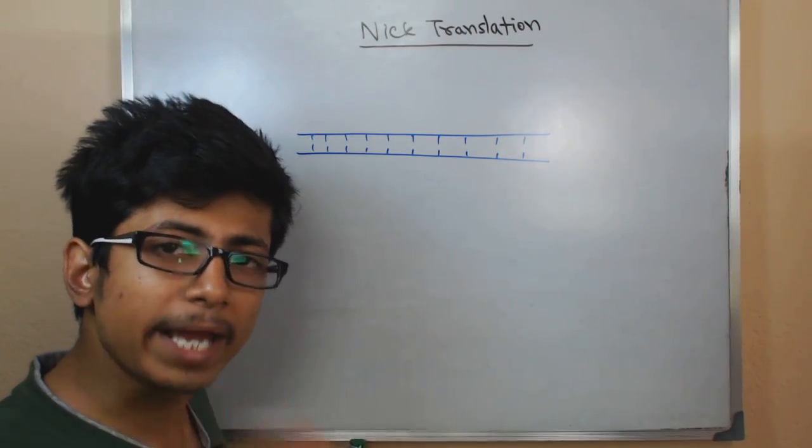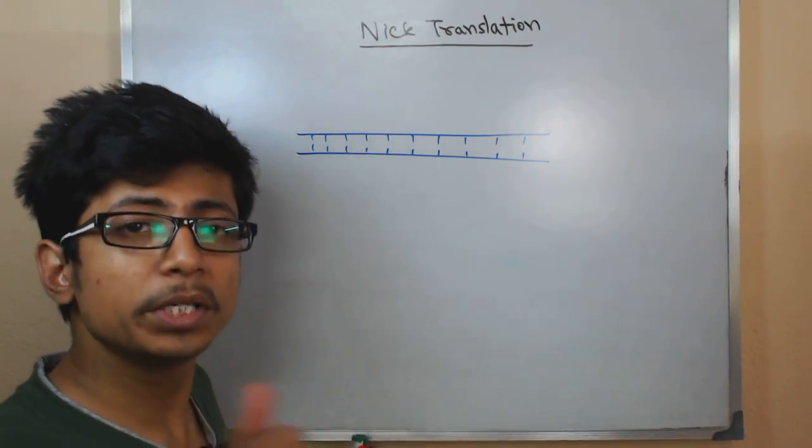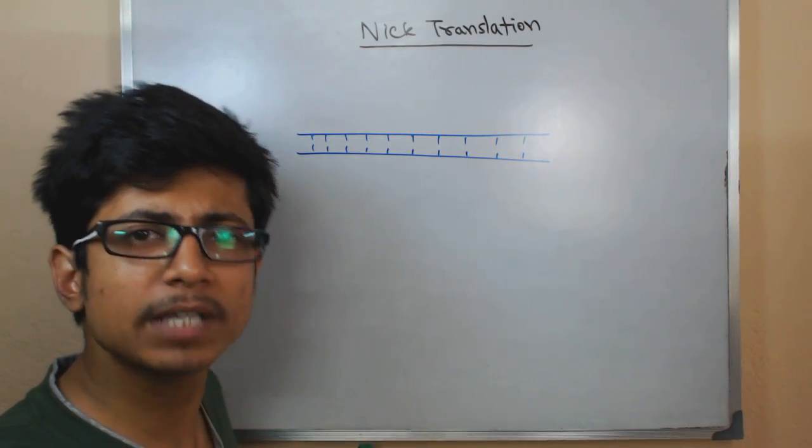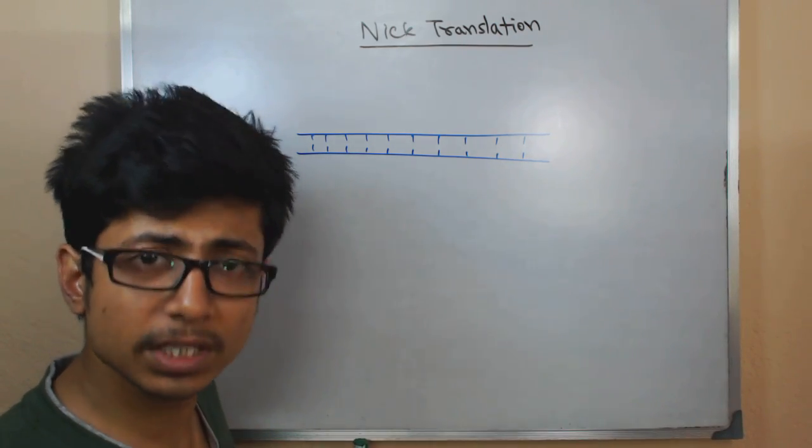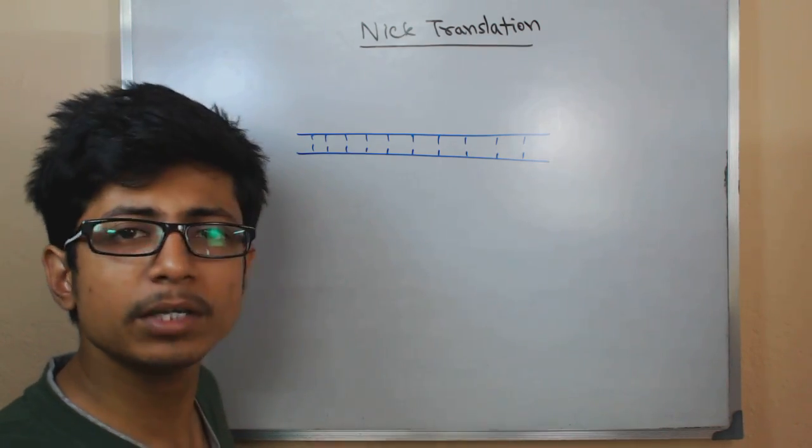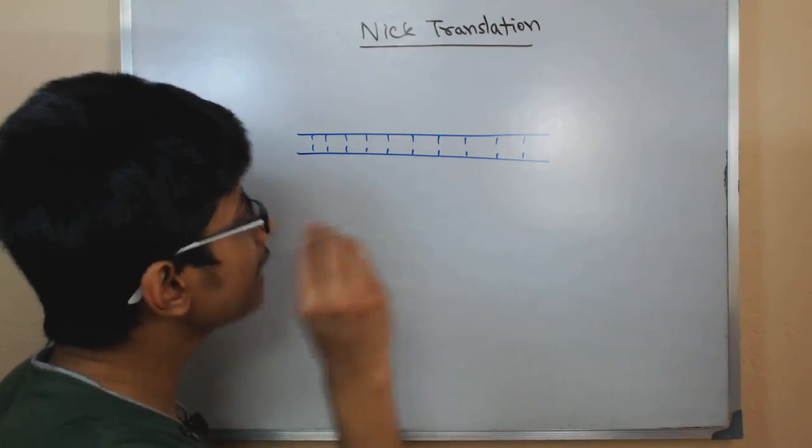So to find the presence of a particular gene or DNA, we need to tag them with certain types of dyes or fluorescent markers or radioisotopes. So for that reason, we will do this nick translation process.